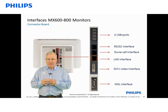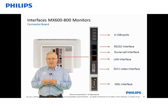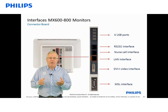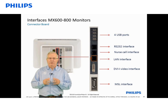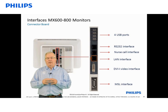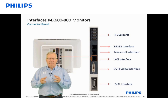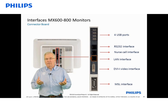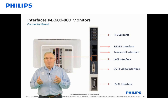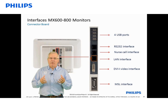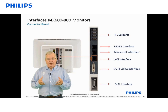Next is the network connector. Just like in the 400 to 550, this is where we connect the network cable and it allows the monitor to show its information at a surveillance station. Below that is our DVI connector — very similar and same functionality as with the 400 to 550. I can have a slave display with the same resolution as on my primary screen.